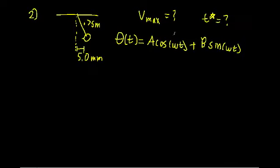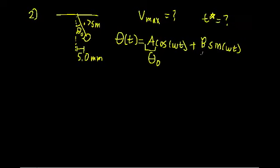Recall from the mass-and-spring example that the A term is equal to our initial displacement — in this case our initial angular displacement, so let's call it θ₀. The B term is equal to our initial angular velocity, but we didn't give it any initial angular velocity, so B goes to zero. We're just working with the cosine term.